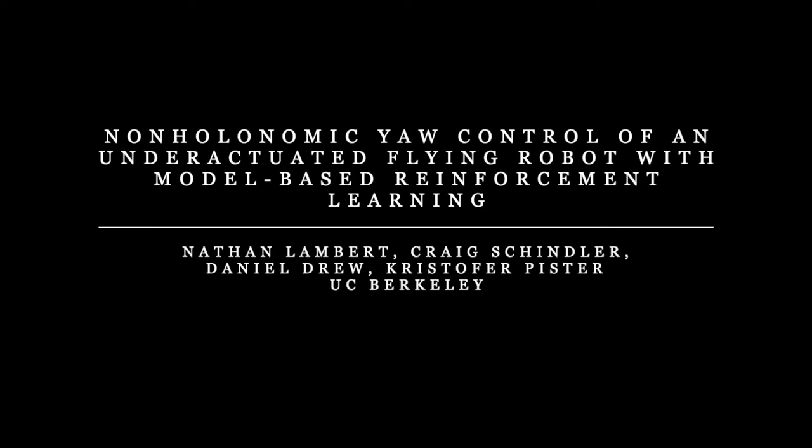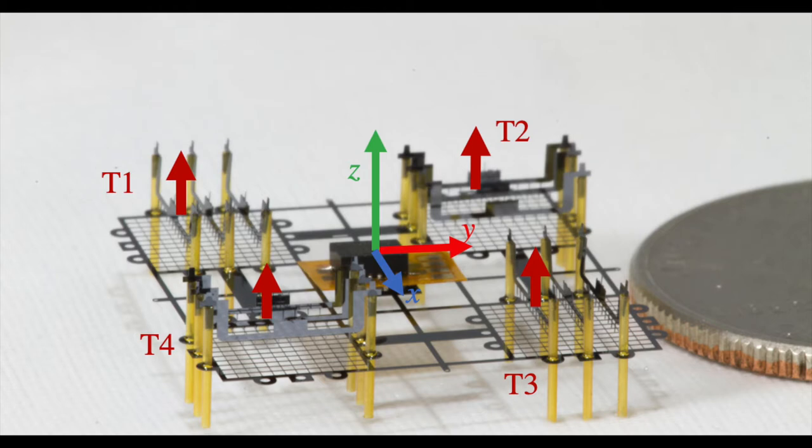Nonholonomic Yaw Control of an Under-Actuated Flying Robot with Model-Based Reinforcement Learning. In this work, we derive a Lee Bracket controller for the yaw direction of a novel micro-robot, the ionocraft.